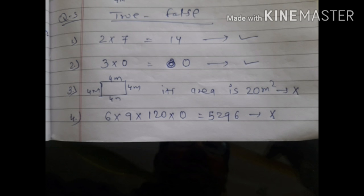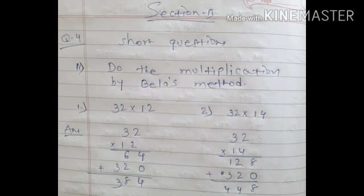So these things we have to remember. Next question: short questions. Do the multiplication by Bela's method. Okay, dear students, if Bela method is mentioned, then we have to follow the rule that we write zero in the second step.